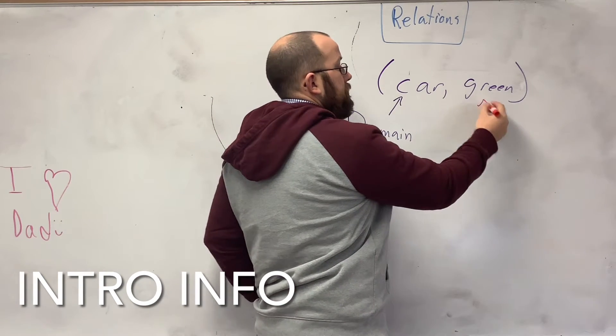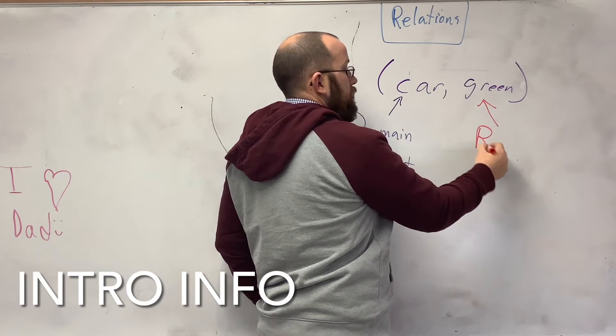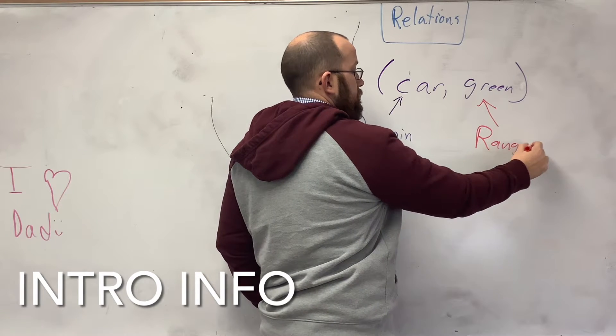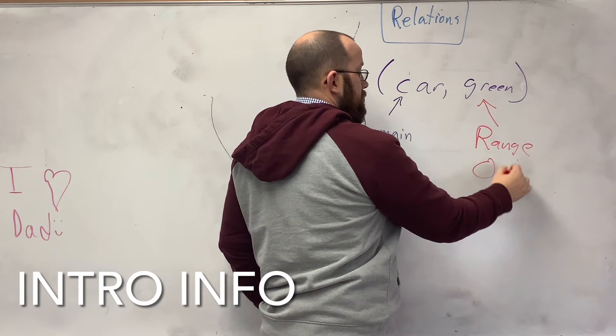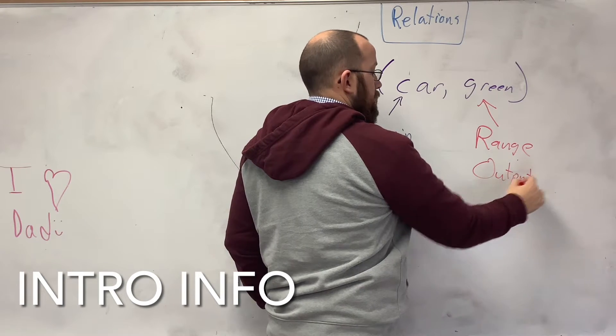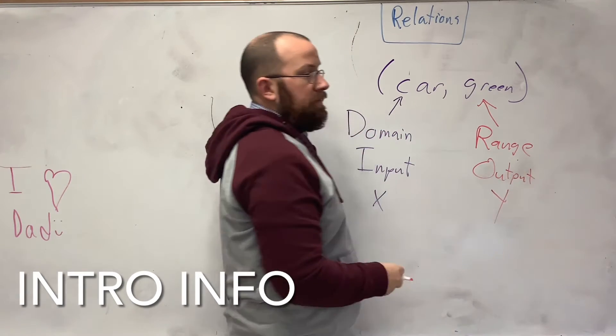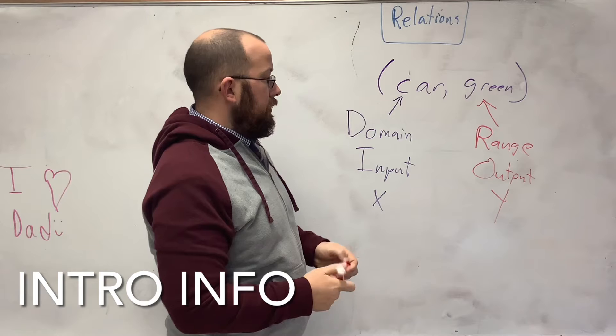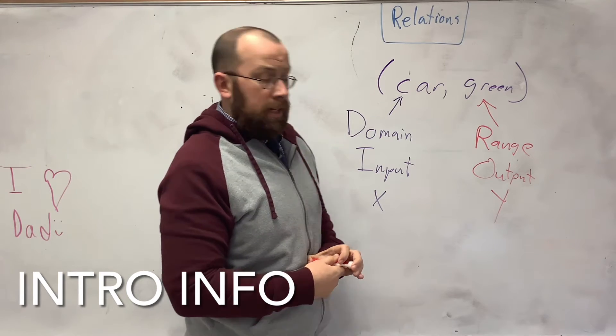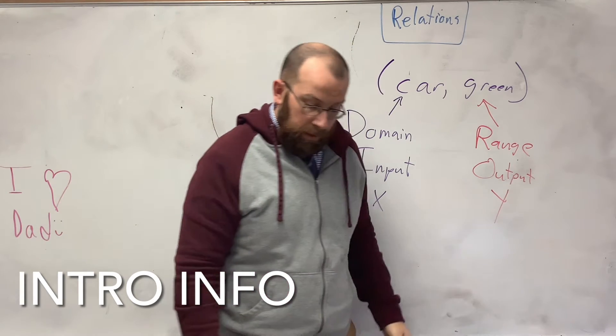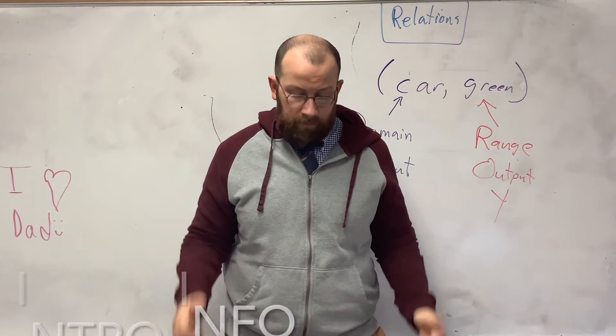The green is called the range, the output, or simply just the y value. It's an x, y point, domain and range. This is going to be important as we go through this and the rest of the year. Now let's do some examples of this.